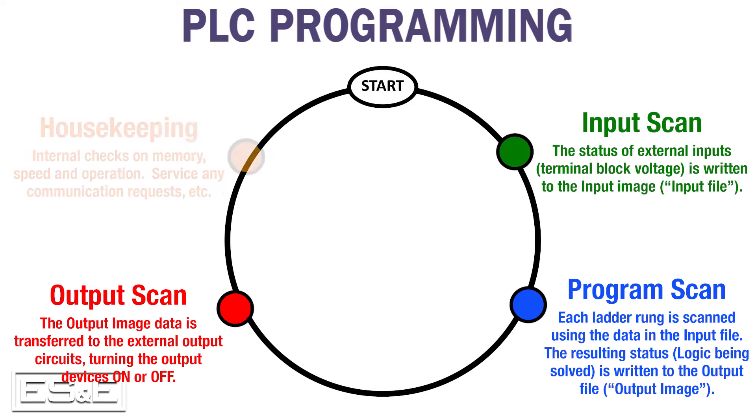During the maintenance or housekeeping task, the PLC performs functions like communicating with variable frequency drives or human machine interfaces. It also performs internal checks and verifies that it didn't take too long to execute the program. Once all of this is complete, it restarts a new scan.